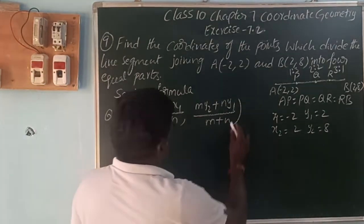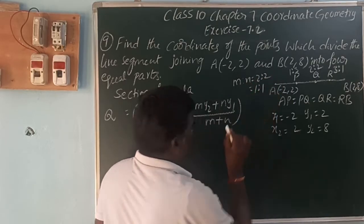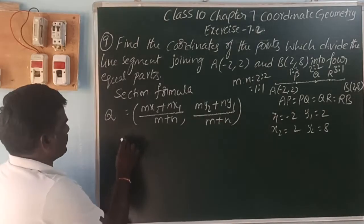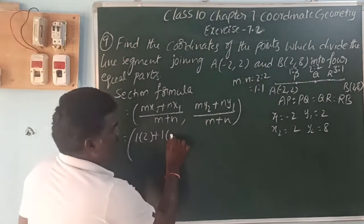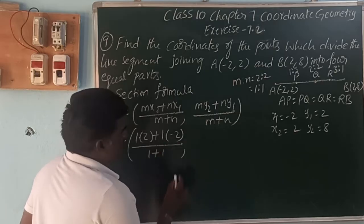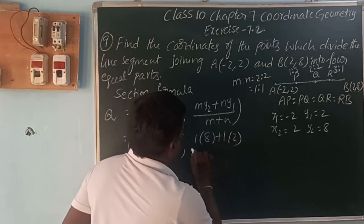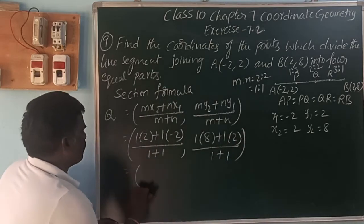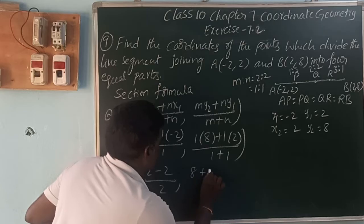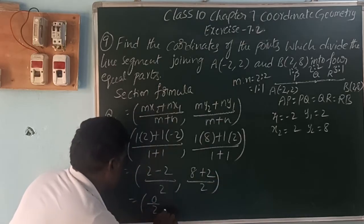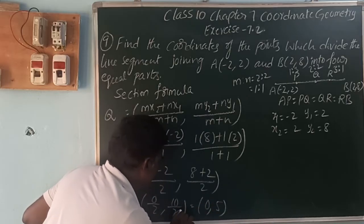At point Q, the ratio is 2:2, which is nothing but 1:1. So M is 1 and N is 1. That is: (1×2 + 1×(-2)) / (1+1) = (2 - 2) / 2 = 0/2 = 0. And (1×8 + 1×2) / (1+1) = 10/2 = 5. So Q is (0, 5).